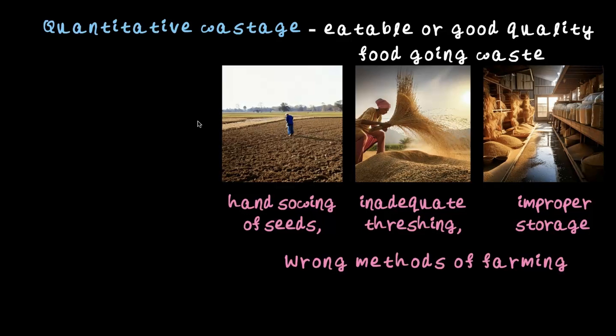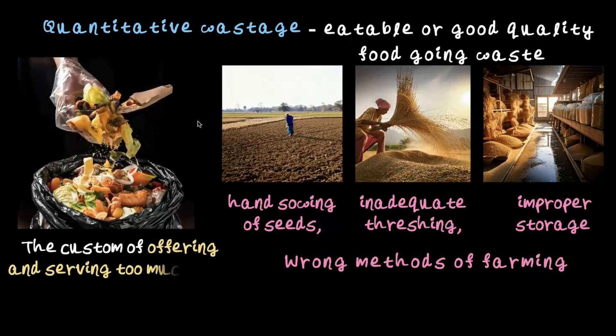It's not just wrong methods of farming that lead to quantitative wastage. It is also the custom of offering and serving too much food at parties, weddings, and even birthday parties — too much food is prepared and a lot of it goes to waste. And that wasn't spoiled food; it was good quality food prepared in too much quantity that got thrown out. This is quantitative wastage.